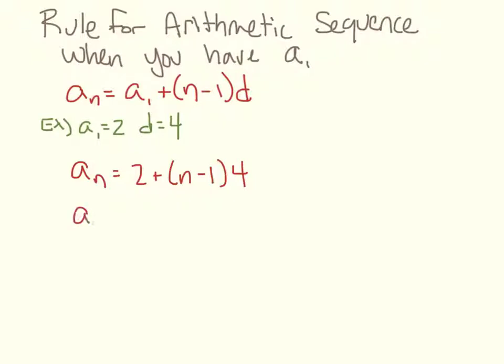So I distribute the 4 plus 4n minus 4. And my expression for the aₙ, for the nth term, is 4n minus 2.